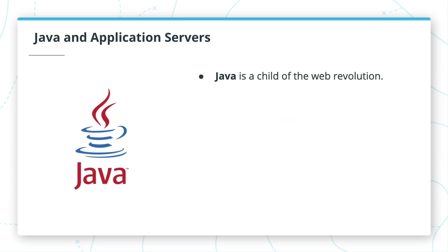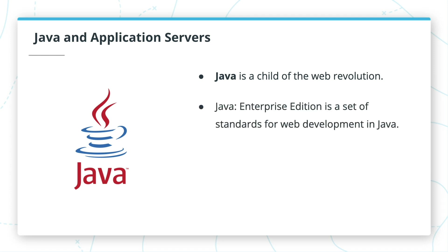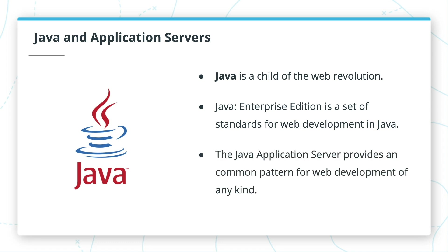Java emerged in the mid-to-late 90s, right as the web revolution was kicking into high gear. Shortly after its release, an official web servlet specification was developed, and a few years later, the concept of an application container was laid out in the release of Java Enterprise Edition — a set of official recommendations and specifications for web development in Java. The application container was a server that could host many different applications at once and connect them all to the web through a standard interface, the servlet. Suddenly, in Java land, creating and connecting a cluster of specialized apps was trivial.